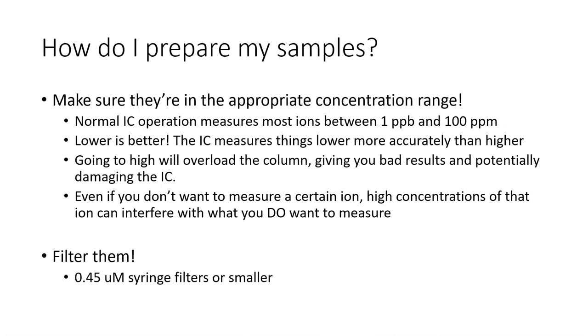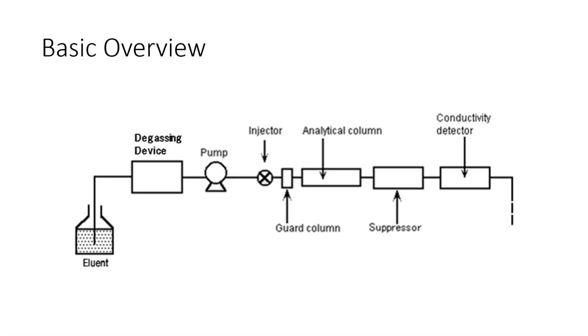Now we'll move into a basic overview on the IC. I'm gonna refer to this image a lot because it kind of just goes through the general flow path and we'll run through each one of these parts individually. So we have our eluent which goes through a degasser, we have the pumps that push eluent and all of the flow through the system, we have an injector, a guard column and analytical column, a suppressor, and a conductivity detector.